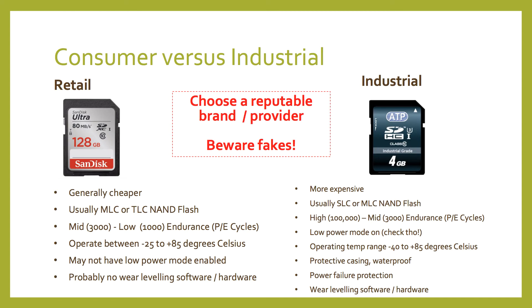Let's take a quick look at consumer versus industrial SD cards. Consumer cards are cheaper, usually have MLC or TLC NAND flash, and are mid to low endurance. They operate between negative 25 to plus 85 degrees Celsius, may not have low power mode enabled, and probably have no wear leveling software or hardware. Industrial SD cards are much more expensive, usually have SLC or MLC NAND flash for high to mid endurance. They have low power mode — though it may need to be enabled — and operate from negative 40 to plus 85 degrees Celsius. They often come in protective casing, are waterproofed, and have features like power failure protection and advanced wear leveling.